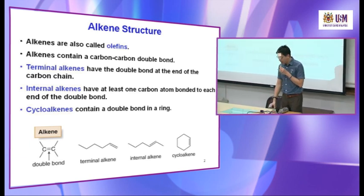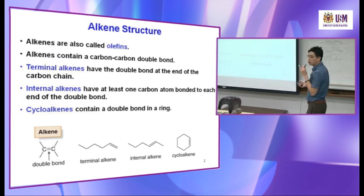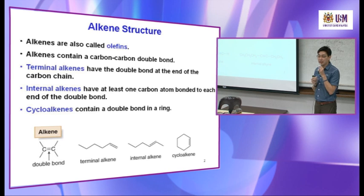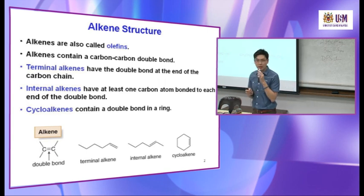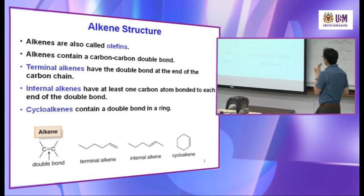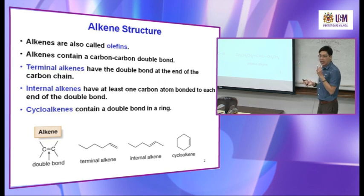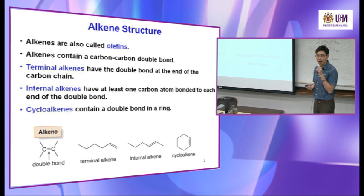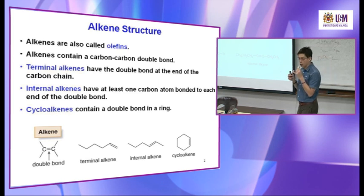An alkyne has the general molecular formula CₙH₂ₙ₋₂. The degree of unsaturation for an alkyne is 2 — this was tested in the exam. Compared to alkane CₙH₂ₙ₊₂, the alkyne has 4 fewer hydrogens, giving a degree of unsaturation of 2. The triple bond introduces two degrees of unsaturation.